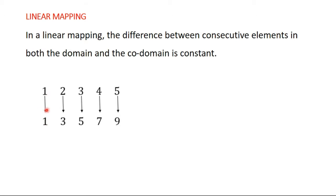So one maps onto one, two maps onto three, three maps onto five, four maps onto seven, and five maps onto nine. Now we are saying that if it is a linear mapping, this is the condition: the difference between consecutive elements.